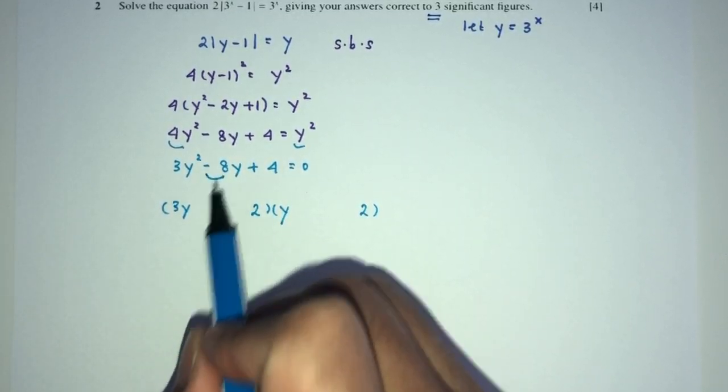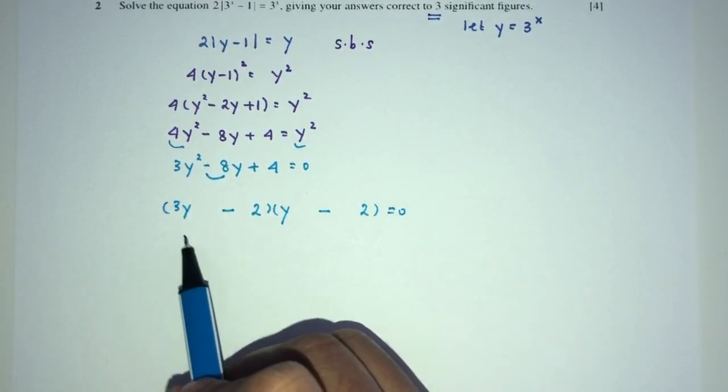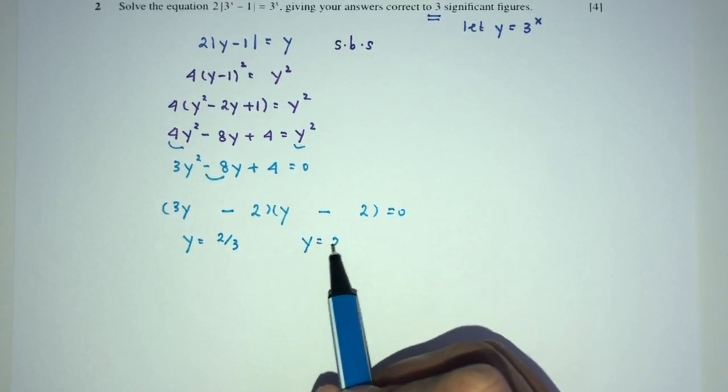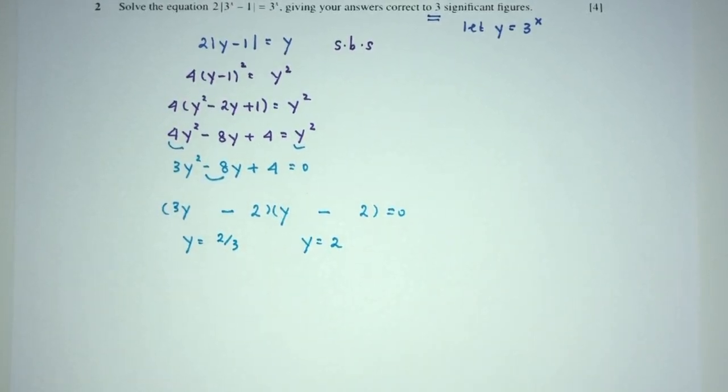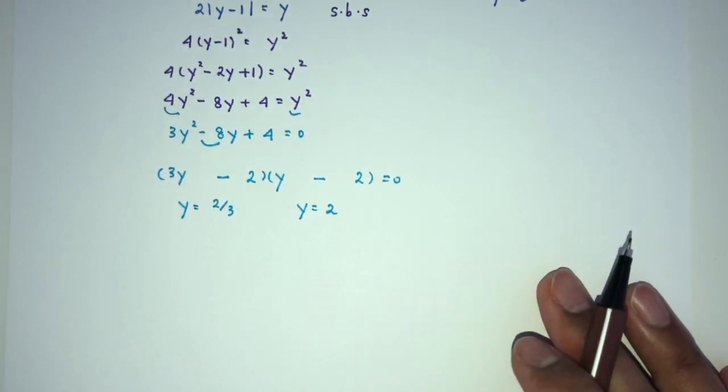4 is 2 times 2. To get minus 8, we have to have minus 6 and minus 2. So, y will be the value of 2 over 3, and y will be the value of 2. Again, it is a quadratic equation. If you can solve by using this factorization, you can always use your formula to find the value of y.